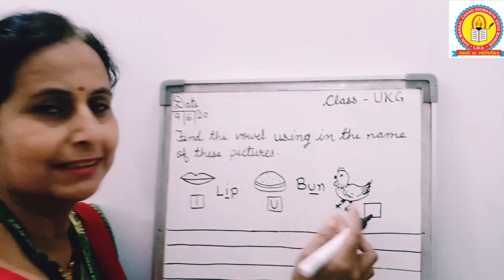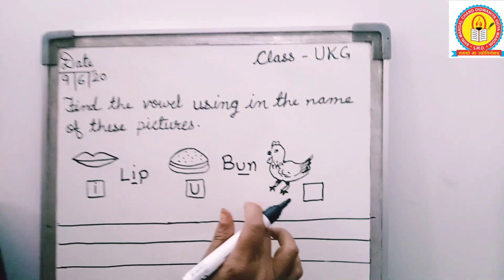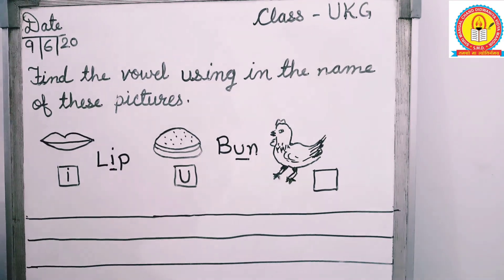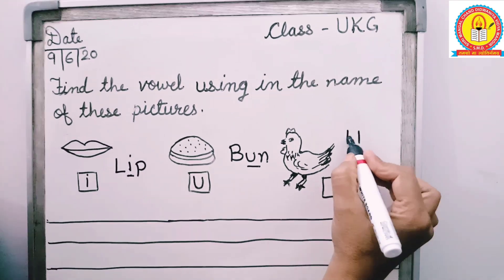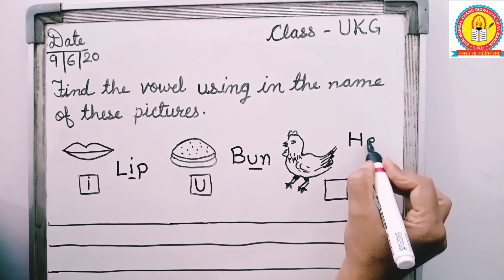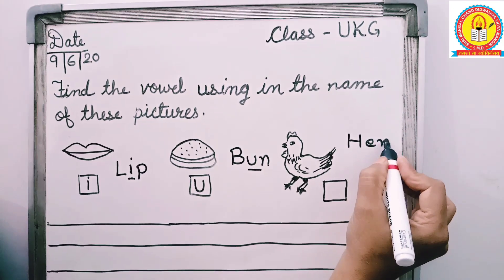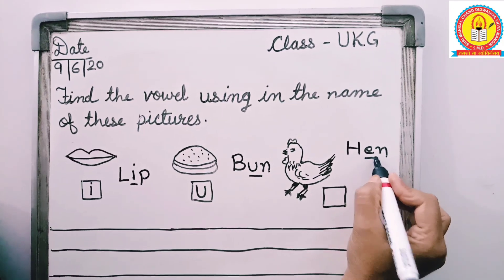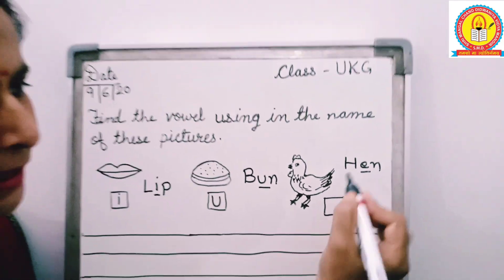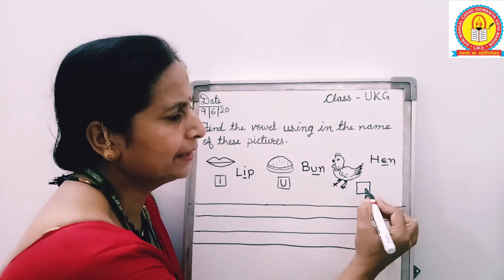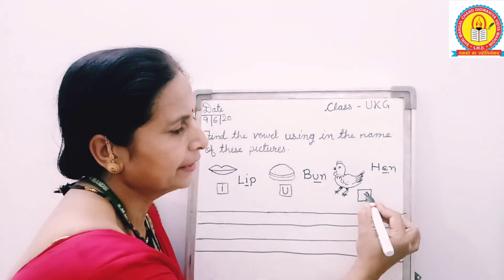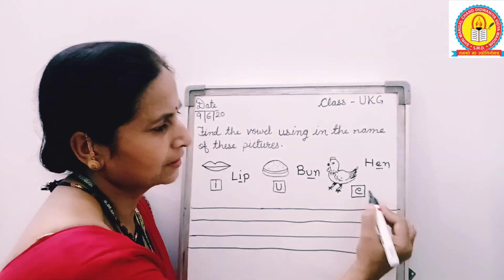What is this? This is hen. H, E, N — hen. This is the vowel. E is vowel. So we will write the E in the box.